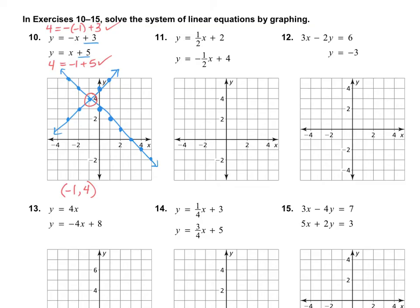Let's take a look at number 12. The first thing I notice on number 12 is that this equation is written in standard form. So whenever we have an equation written in standard form, the easiest way to graph it is to plug in zeros. So I'm going to plug in 0 for x, and that gives me -2y = 6, which means y = -3. So (0, -3) is my y-intercept.